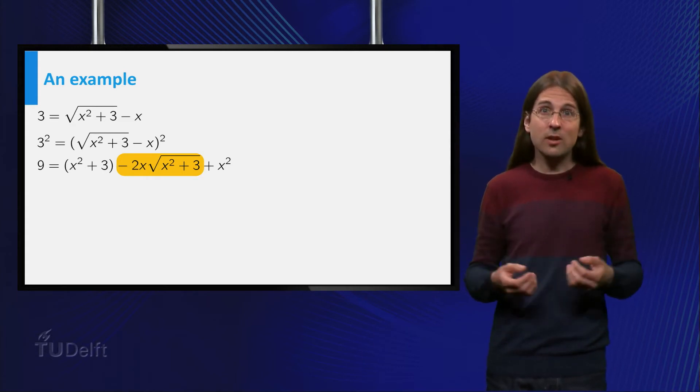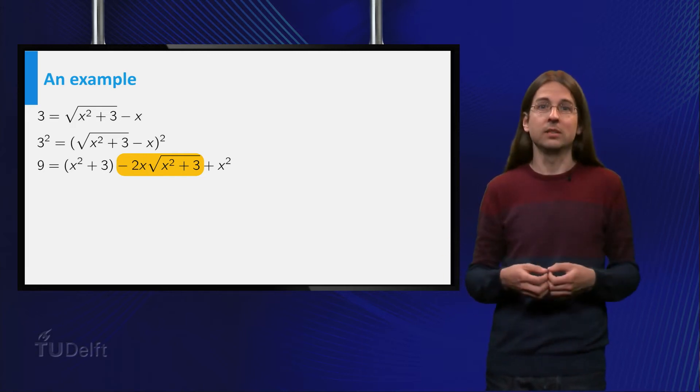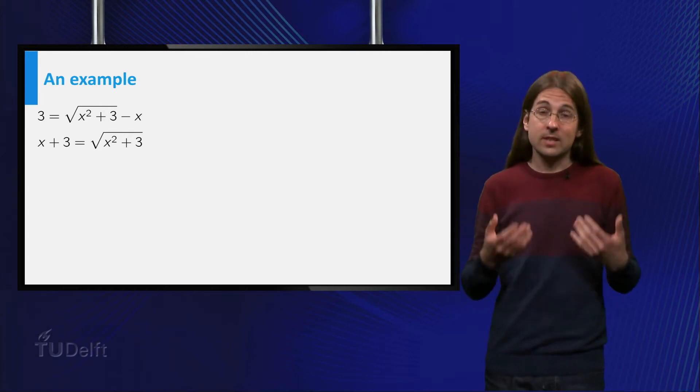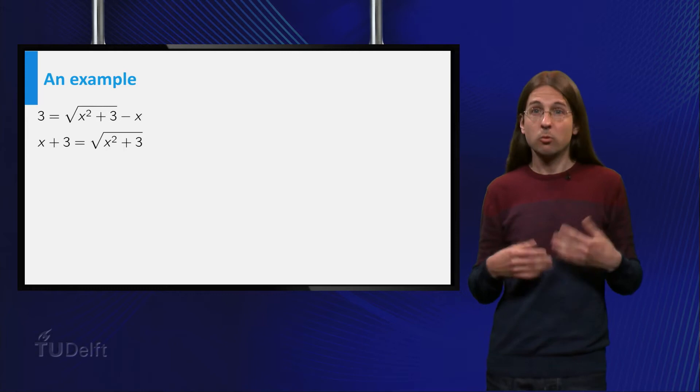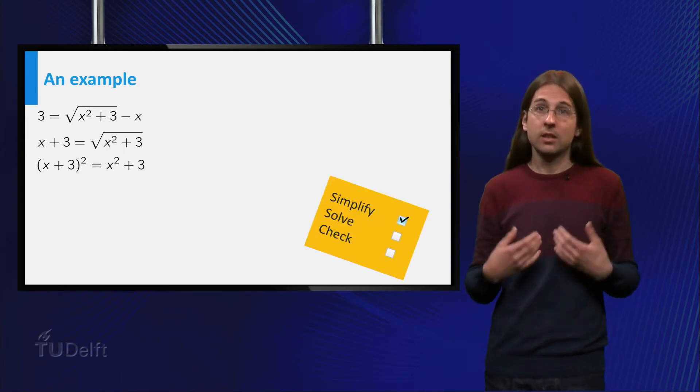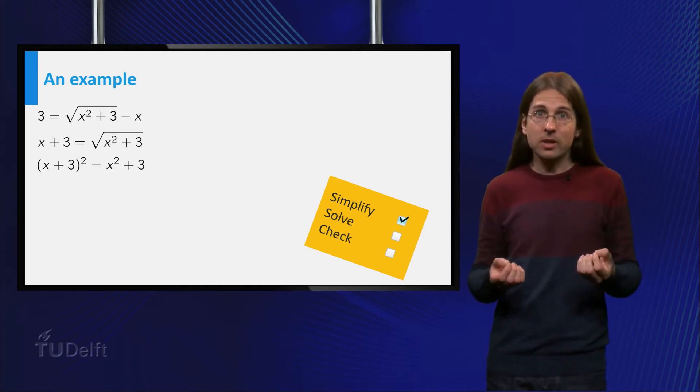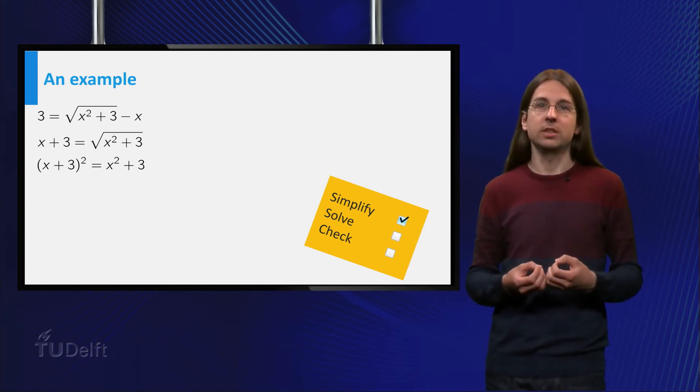The best option is to isolate the square root on one side of the equation and then square. This gives x plus 3 equals the square root of x squared plus 3, which, after squaring, becomes x plus 3 squared equals x squared plus 3. This is a polynomial equation, so now we know how to proceed.